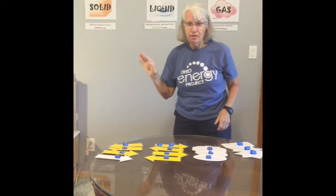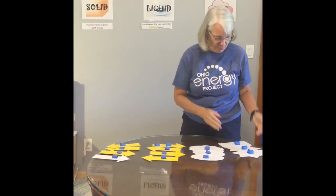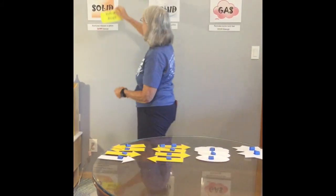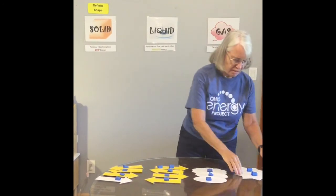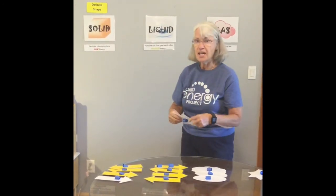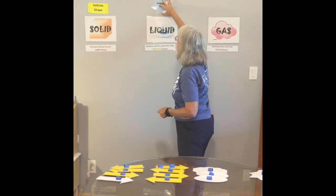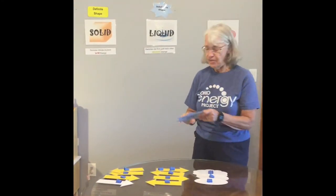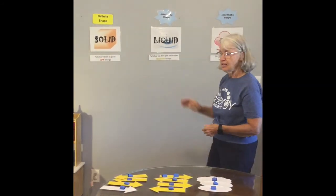So knowing that, that's going to lead us to the shape. The shape of a solid — the word we're going to call it — is definite. Solids have a definite shape. Liquids take the shape of a container, so we're going to call that an indefinite shape. Gases also have an indefinite shape, and this is because the particles can flow past each other.